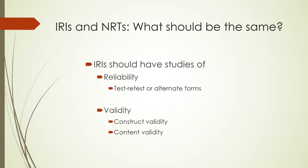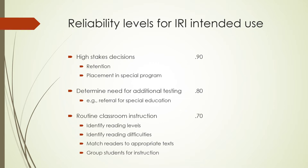What should be the same about both kinds of tests? Informal reading inventories should have studies of reliability, especially test-retest or alternate forms. If adequate reliability is established, then it's appropriate to look at validity, especially construct and content validity. Let's look at the reliability levels recommended for informal reading inventory intended use. You will notice they are very much the same as for norm reference tests. For high-stakes decisions like retention or placement in a special program, .90 or greater.